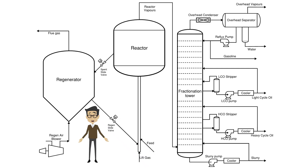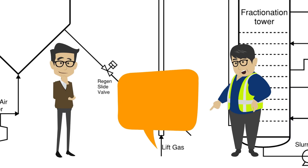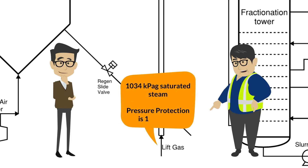The feed enters the reactor standpipe and mixes with the lift gas and catalyst. What are the process parameters for the lift gas? The lift gas is 1,034 kPaG saturated steam. The pressure protection on that system is 1,250 kPaG.